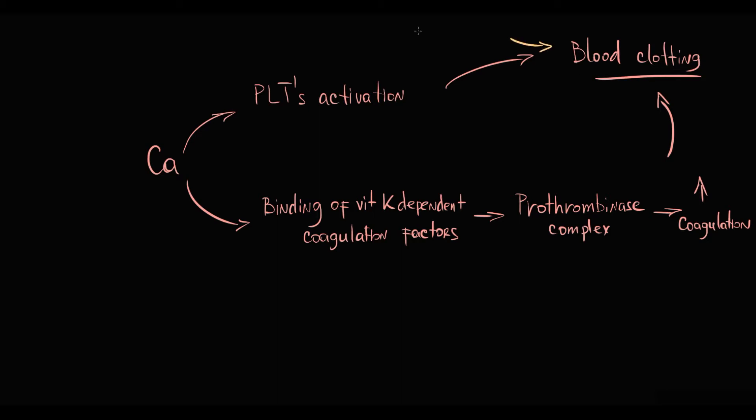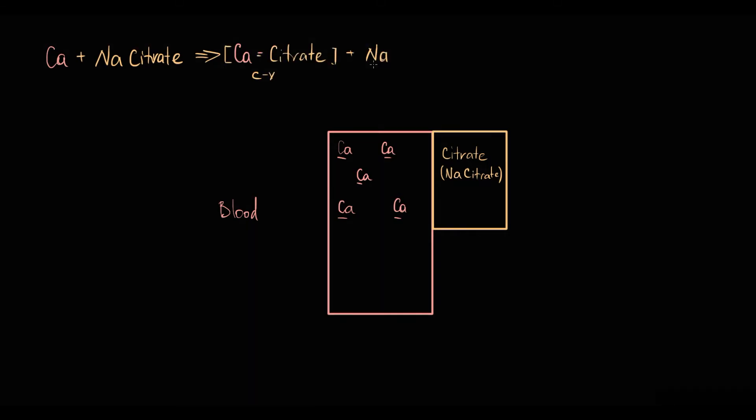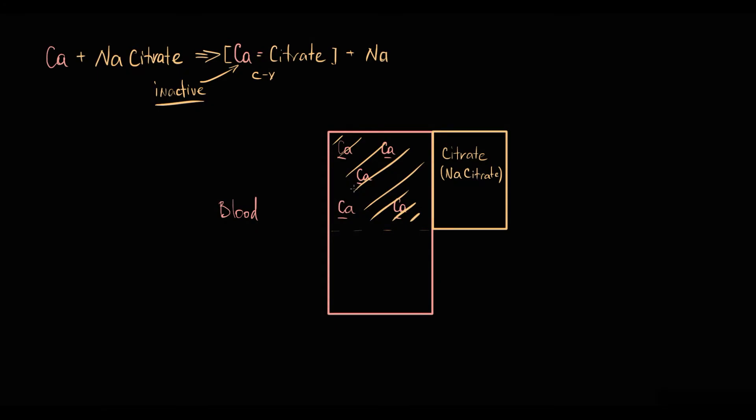So to prevent blood clotting, calcium in the blood should be neutralized. For this purpose, we add citrate salts such as sodium citrate that bind calcium ions. This results in formation of calcium citrate complex and release of sodium ions. In the calcium citrate complex, calcium is inactive. So citrate neutralizes calcium and now we can store such blood until it's delivered to the laboratory.